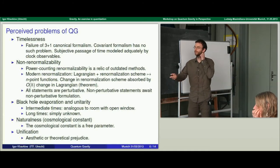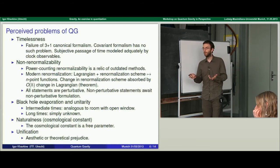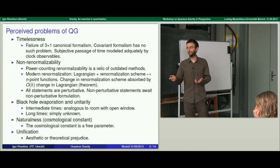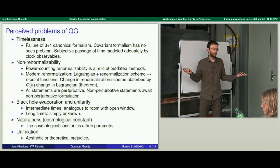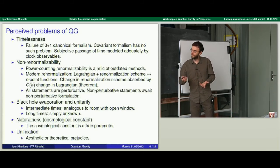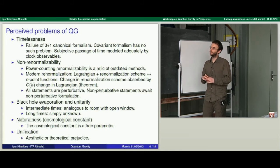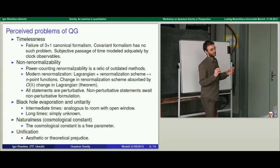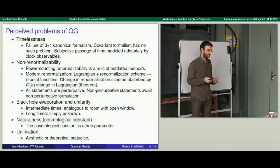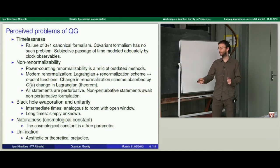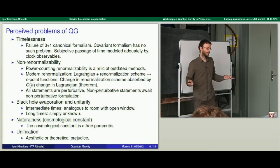There are also questions of naturalness — for example, some people are unhappy with the smallness of the cosmological constant. But it's just a free parameter in the theory; there's no particular reason for it to have any value other than what we measure by experiment. There's also been a program in theoretical physics to try to unify all forces including gravity — by that I mean constructing a Yang-Mills-type theory with a large enough gauge group that gets broken down to a smaller gauge group, and then all the fields including gravitational fields fall out. I think this is aesthetic or theoretical prejudice and not a problem that necessarily needs to be solved.